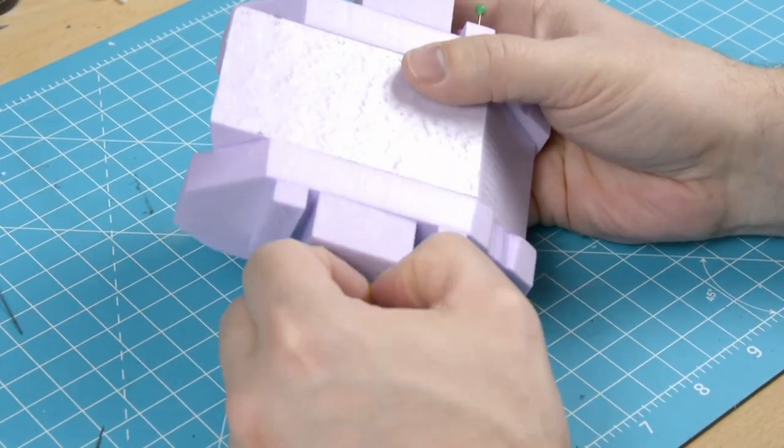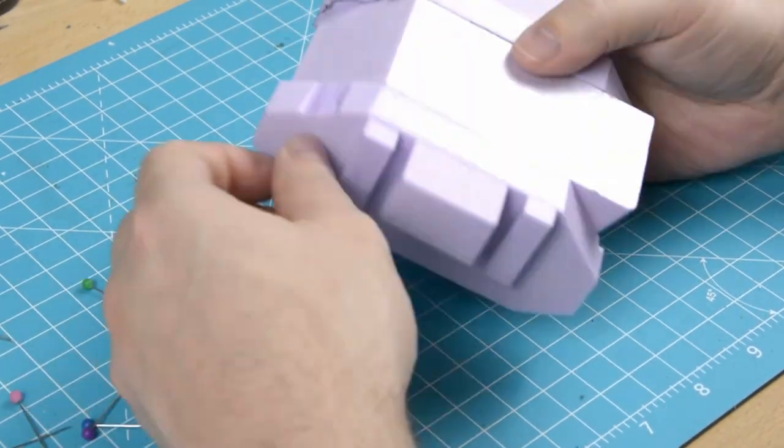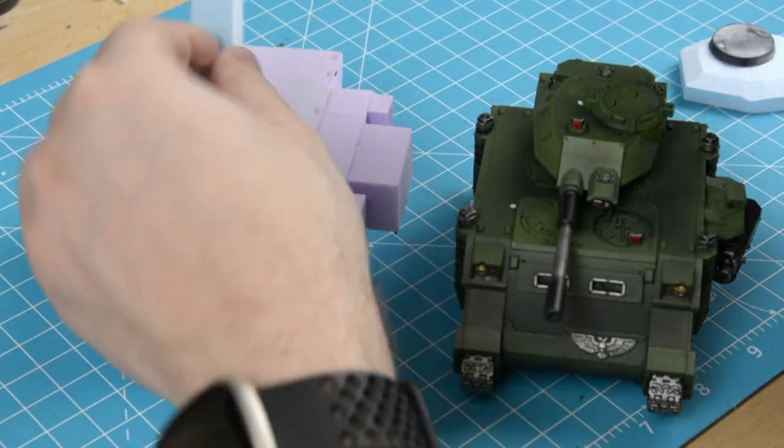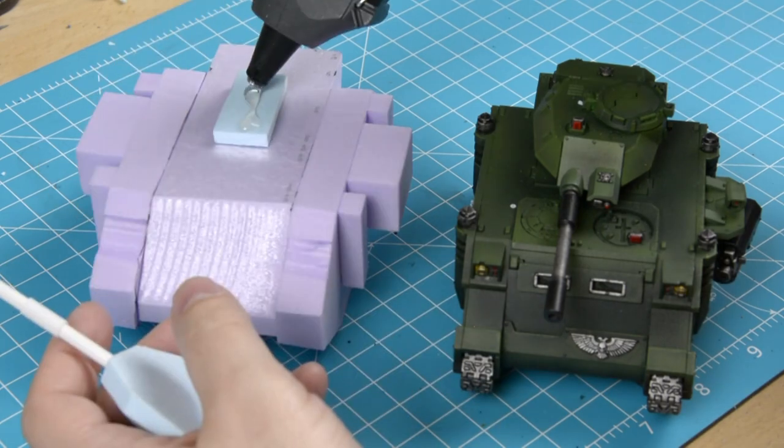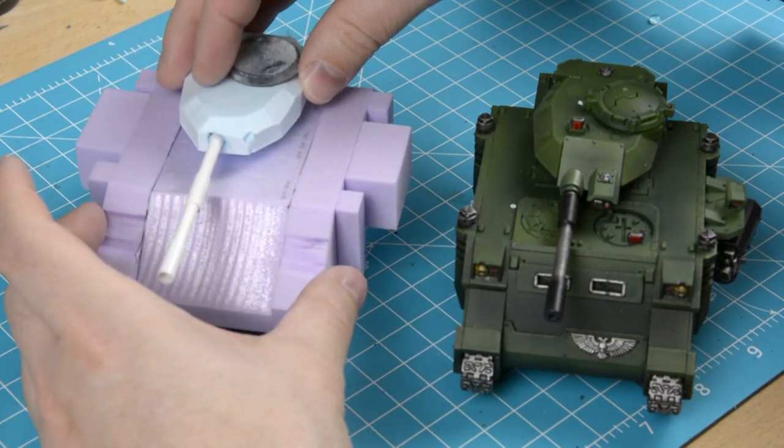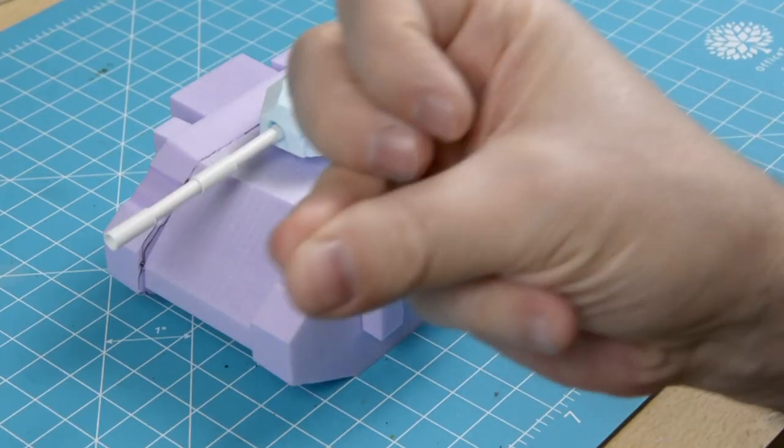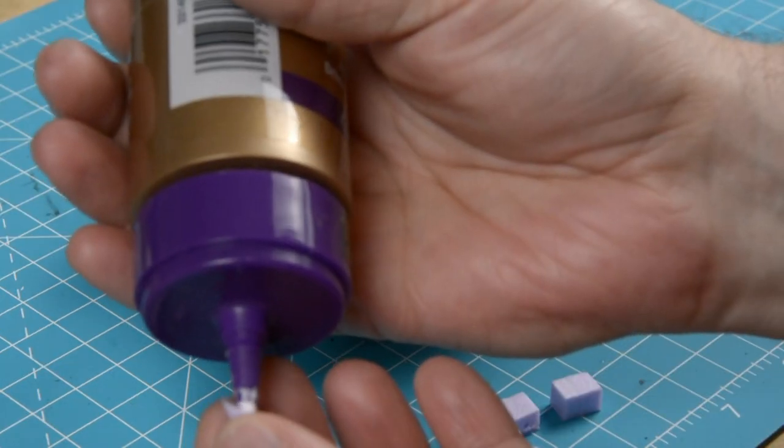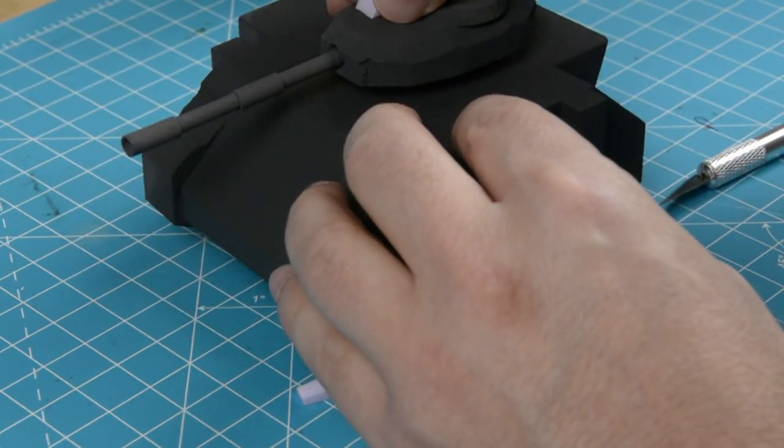Now that it's dry, we can remove the needles. And now it's time to mount the turret. It's looking a little flat, so let's add some more details.